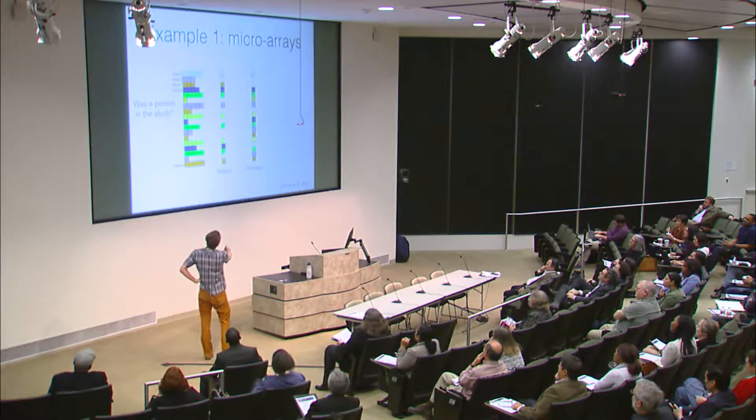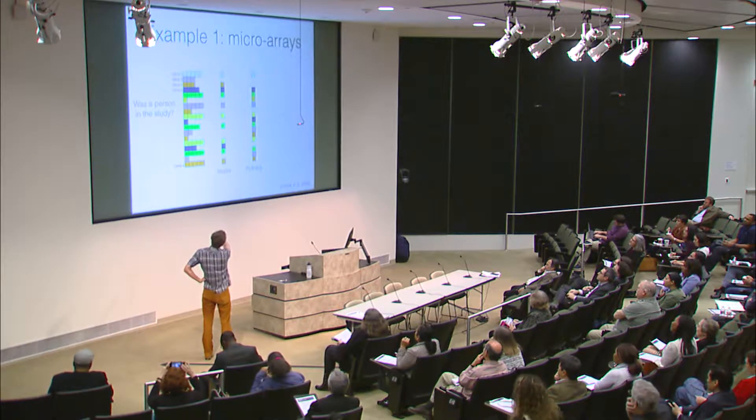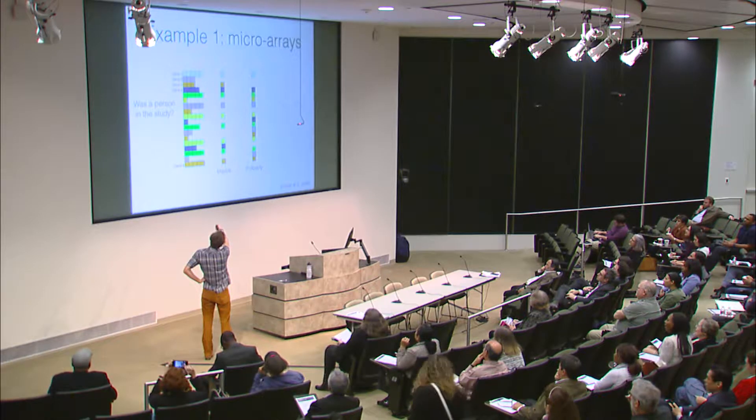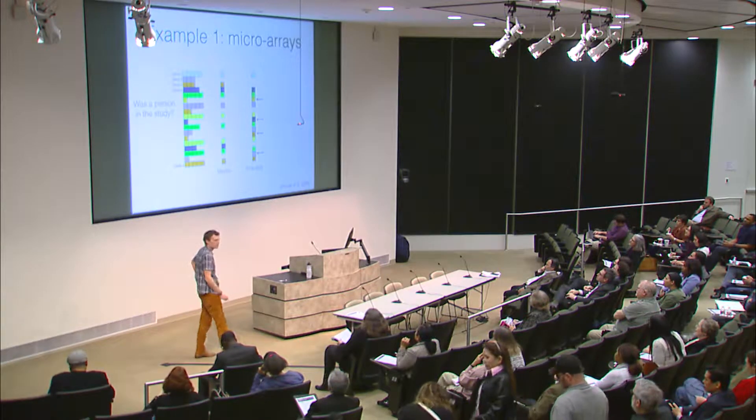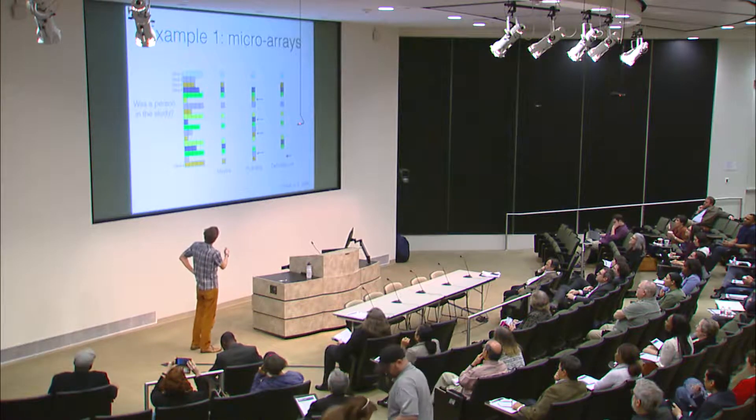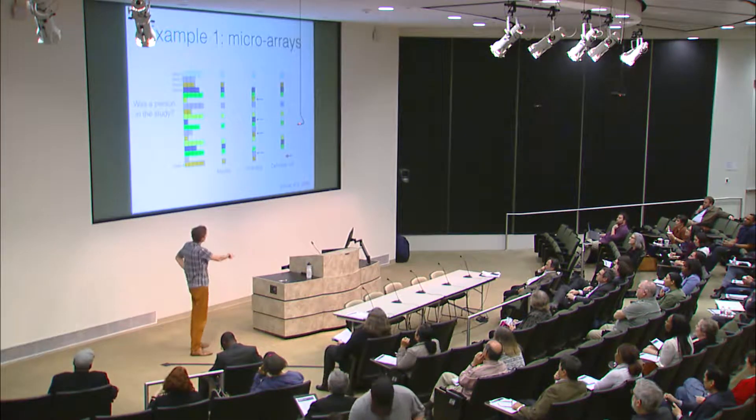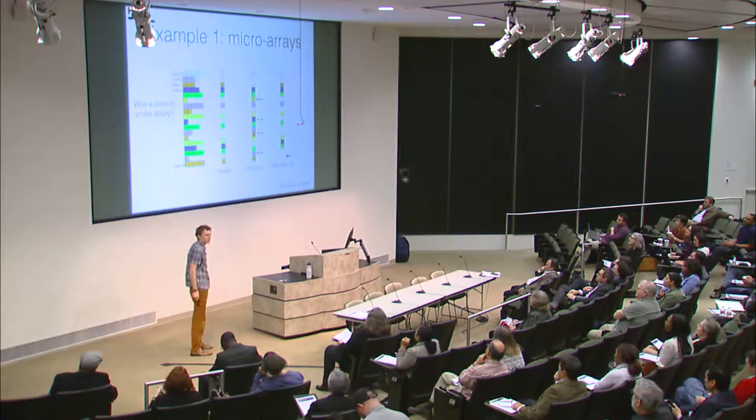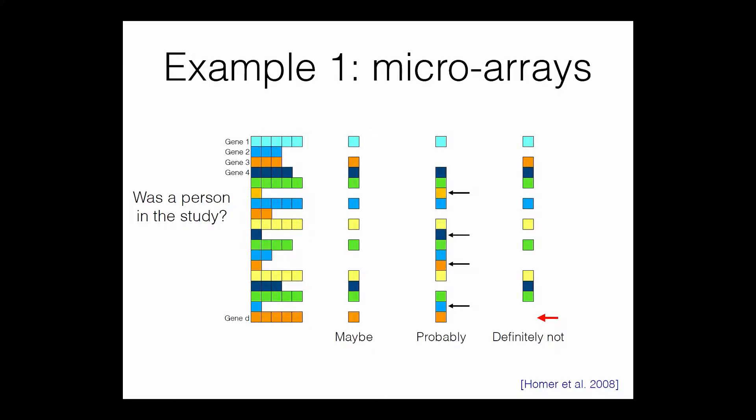Now here's another person. And if you look at this person, then there's all these places where there's only one person in the study who had that gene on. And this person has a gene everywhere there. And now this last person definitely was not in the study because this gene isn't even expressed. Everybody in the study had this gene turned on. So you can kind of actually back out people who belong to studies just from these summed aggregated counts, which is a little disturbing.